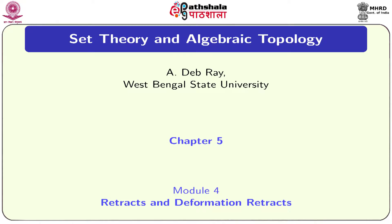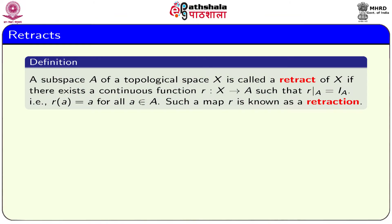We begin with defining a topological analogue of what we call a projection operator. A subspace A of a topological space X is called a retract of X if there exists a continuous function R from X to A such that R restricted to A is the identity function on A. That is, for all a belonging to A, R(a) is equal to a. Such a map R is called a retraction.